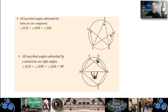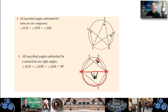All inscribed angles subtended by a semicircle are right angles. The central angle AOB is 180 degrees — it's also a diameter, going through the middle. Any inscribed angle subtending the same arc must be half of 180, so it equals 90 degrees. It's the same central-angle-to-inscribed-angle relationship: the inscribed angle is always half the central angle.